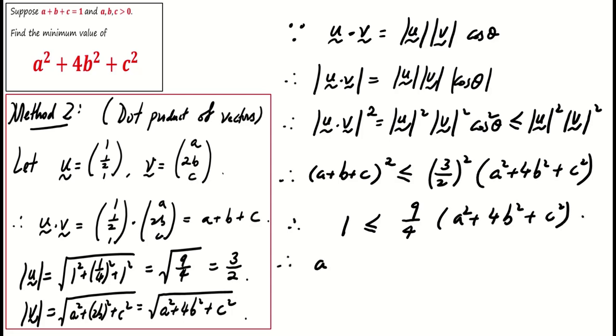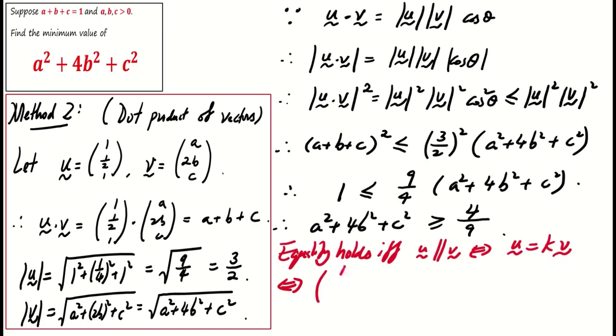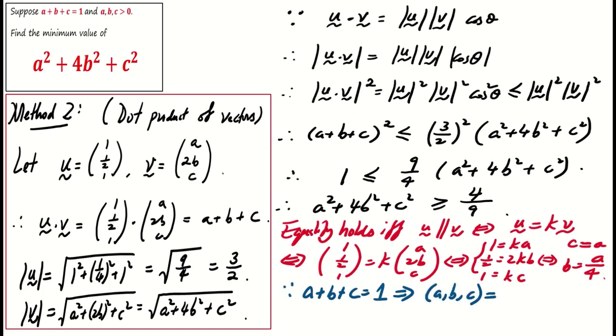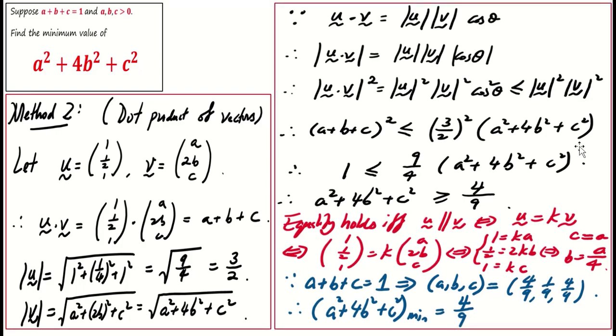Simplifying, we find that a square plus 4b square plus c square is at least 4 over 9. We must check if the equality is achievable. It holds if and only if u is parallel to v, meaning u equals kv for some constant k. Solving this, we arrive at the same conclusion as method 1, that is, abc equals 4 over 9, 1 over 9, 4 over 9. Therefore, the minimum value of the expression is 4 over 9. This concludes method 2.